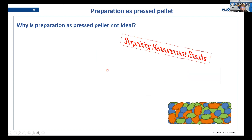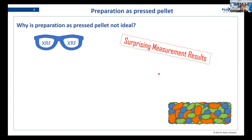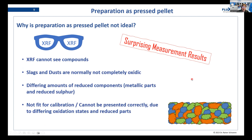To understand why this is happening, you have to see that we are looking at samples using XRF as a measurement method, and XRF cannot see compounds. Slags and dusts are normally not completely oxidic, which means that we can have differing amounts of reduced components — metallic parts or reduced sulfur — and this plays tricks on us because XRF cannot see it.